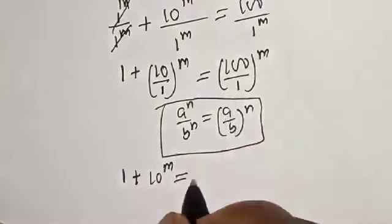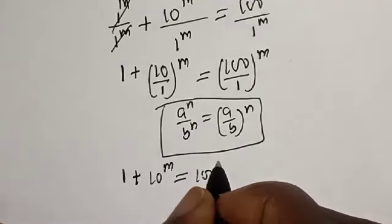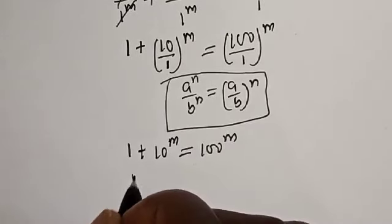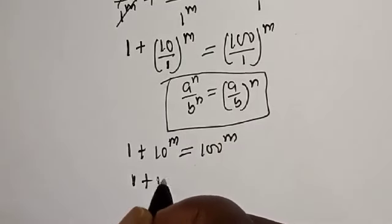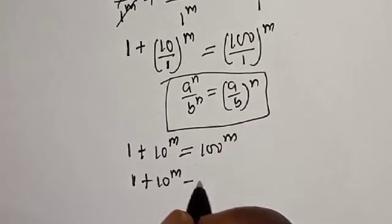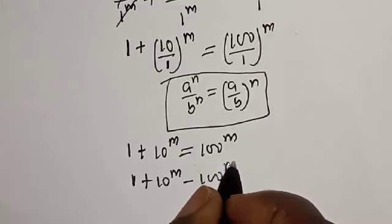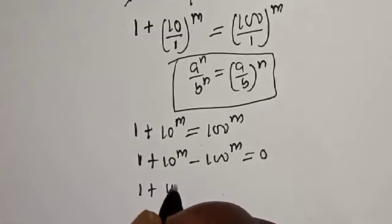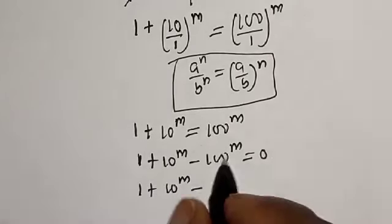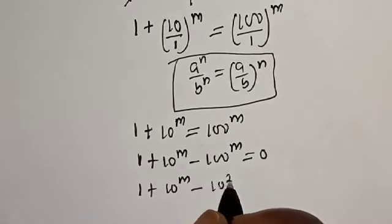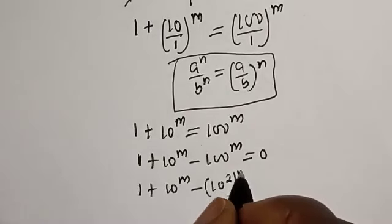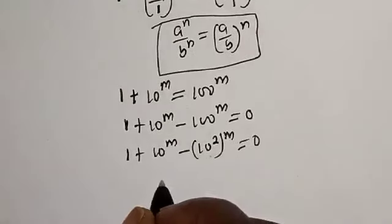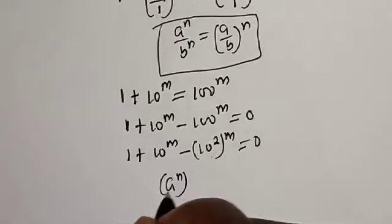This simplifies to 1 plus 10^m minus 100^m is equal to zero. Note also that 100^m equals (10^2)^m, which equals 10^(2m), or equivalently (10^m)^2.